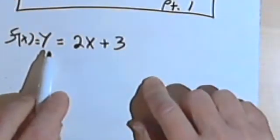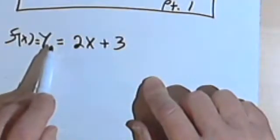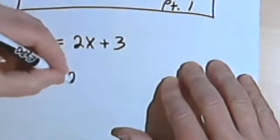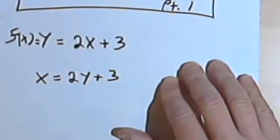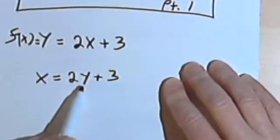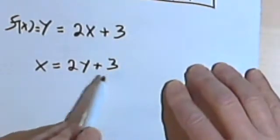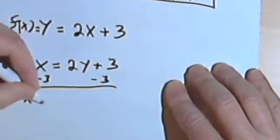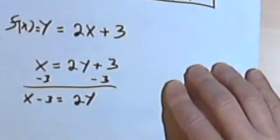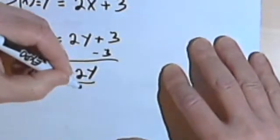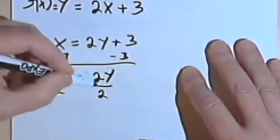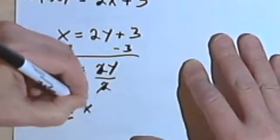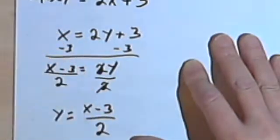What we're going to do is take the x's and y's and swap them. So instead of y equals 2x plus 3, I'm going to write x equals 2y plus 3. And now I'm going to solve this for y — isolate the y. The first thing is to subtract 3 from both sides, giving x minus 3 equals 2y. Then divide both sides by 2, and I'll have y equals x minus 3 over 2.